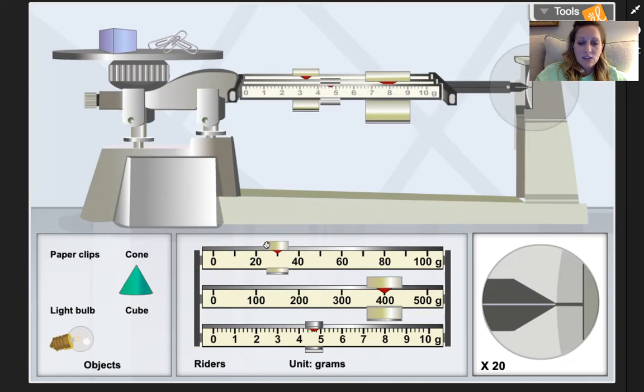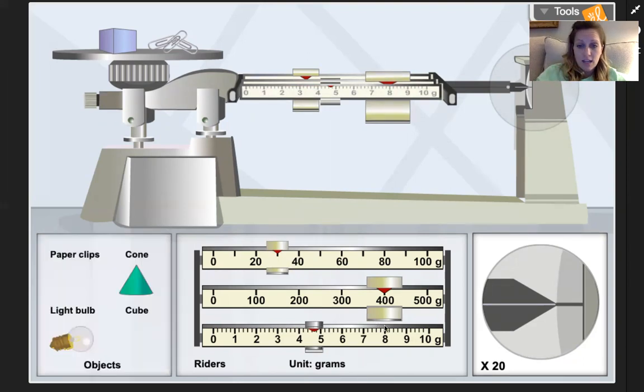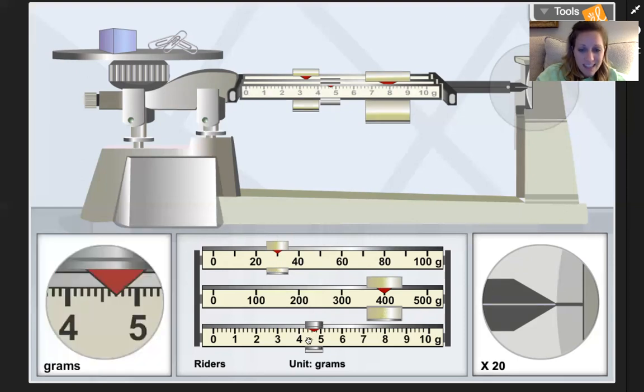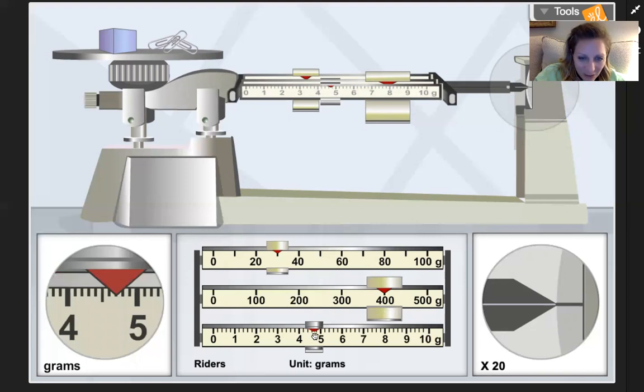But I need to calculate the total mass by adding this plus this plus this, because the total of those masses is the mass. So I need to do 400 plus, now in between the 20 and the 40, halfway between that would be 30, so 400 plus 30 plus, what is this? That's four, so it'd be 434, and then a little bit.